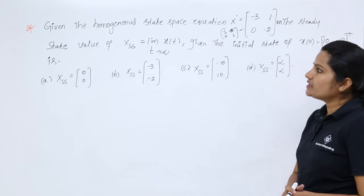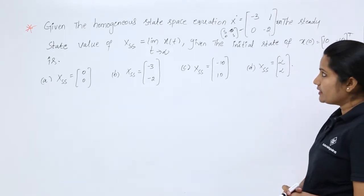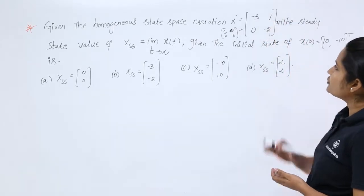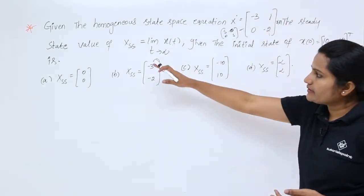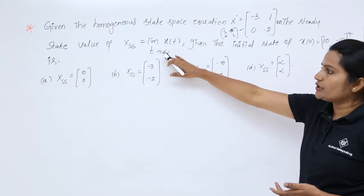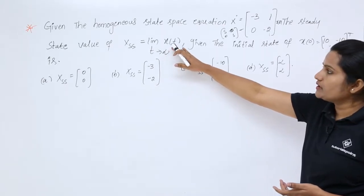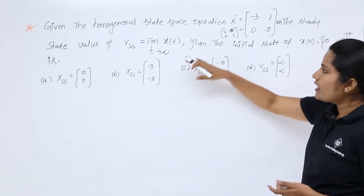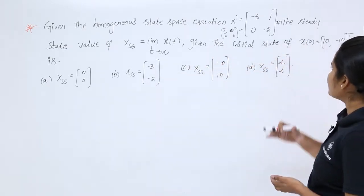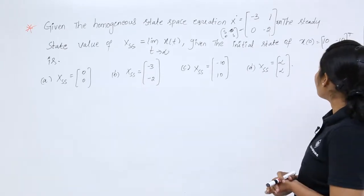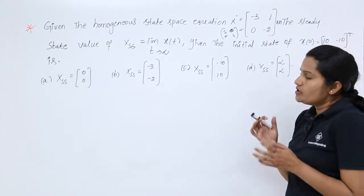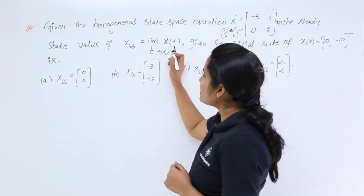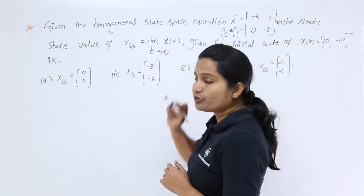You can observe the problem here. Given the homogeneous state space equation: x_dot is equivalent to matrix A into x(t), and the steady-state value x_ss is equivalent to the limit as t tends to infinity of x(t). We need to find out x_ss, the steady-state value, given the initial state x(0) equal to [10, -10] transpose.